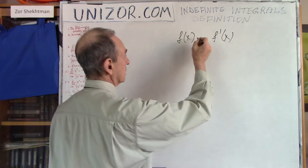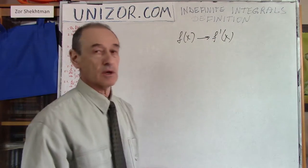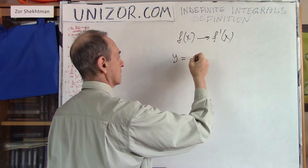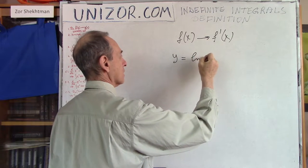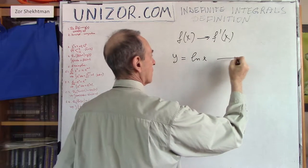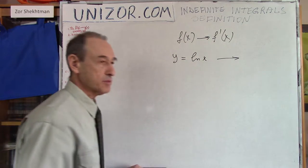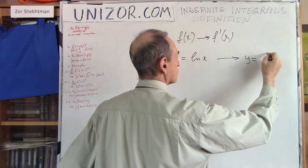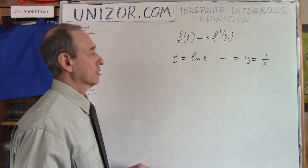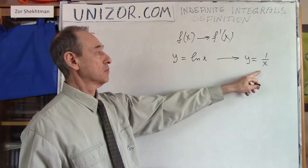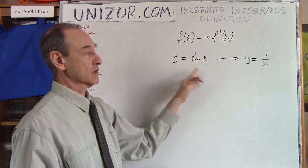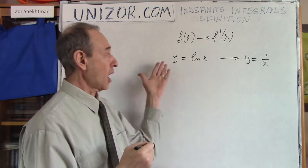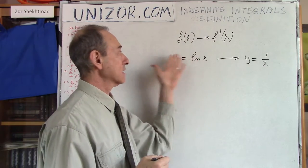The result is: for every function from this set, we find the corresponding derivative. So it's an operation. For any function — say, y equals logarithm x — we apply the procedure of differentiation and come out with another function, which is 1 over x. That's a different function, but it is the derivative of the original. That's why differentiation is an operation on the set of functions: from one function, we get another.